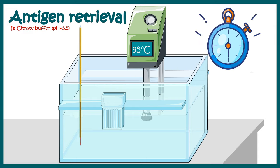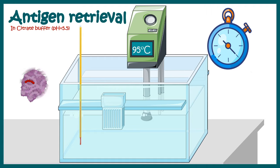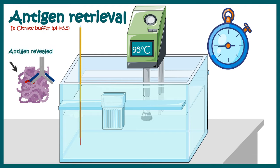The next step is antigen retrieval, which is optional but crucial because many times the epitopes are hidden inside the native structure of the protein, and the antibody cannot recognize them. These epitopes need to be revealed by changing temperature and pH so that the antibody can easily detect the epitope. That is why antigen retrieval is performed in many cases.